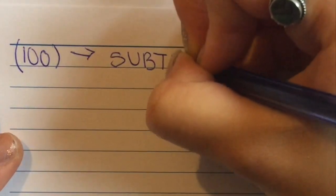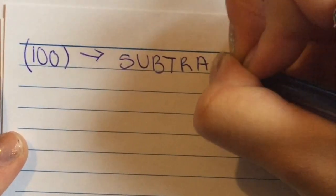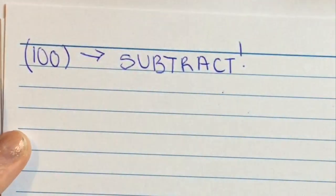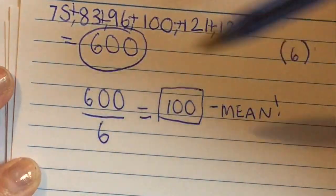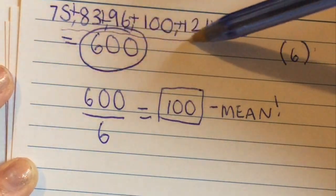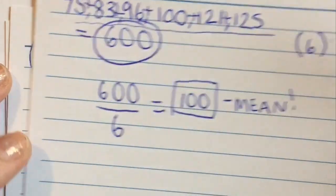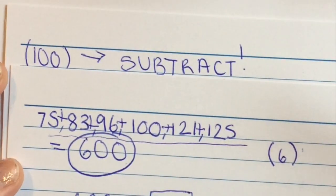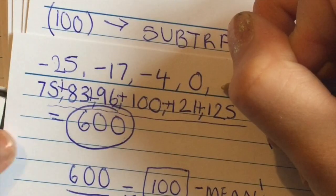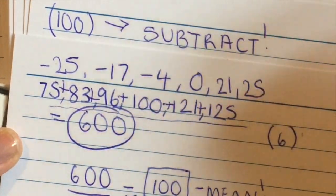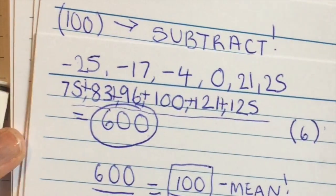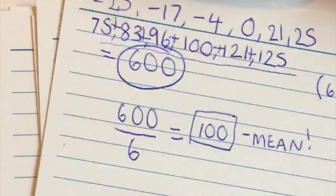With our mean of 100, we're going to subtract — subtract 100 from each of your original numbers, rather than the other way around. So 75 minus 100, 83 minus 100, and so on. You're going to get minuses and positives, and you might even have zeros, but don't ignore them — include them. Your number count doesn't go down.